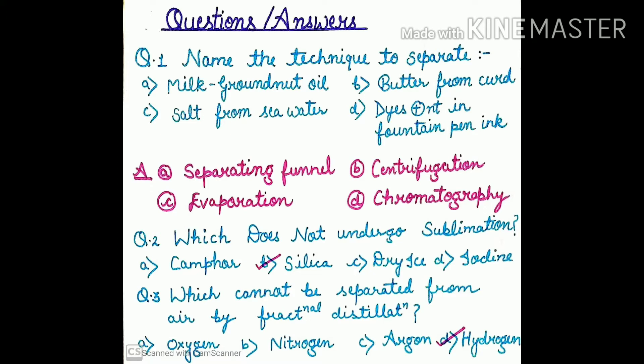Next is butter from the curd. To separate butter from curd, we use the centrifugation process. In this technique, we use equipment called a centrifuge, which rotates at high speed, through which the butter gets separated from the curd.